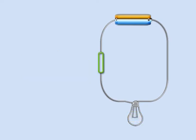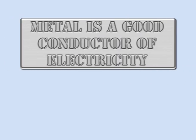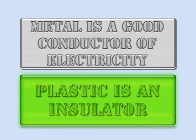However, if a piece of plastic is inserted, the bulb won't light, because plastic won't let electricity pass through. Metal is a good conductor of electricity, and plastic is an insulator.